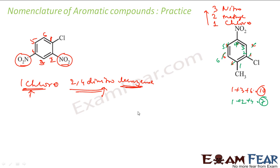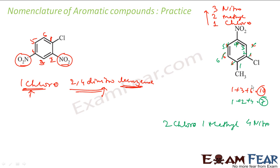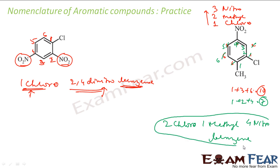So in this case, first we have chloro — chloro is at position 2, so it will be 2-chloro. Then I have methyl at position 1, so 1-methyl. Then nitro at position 4, so 4-nitro. And this is a benzene. The final name is 2-chloro-1-methyl-4-nitrobenzene.